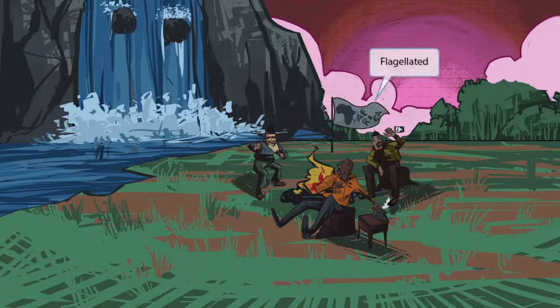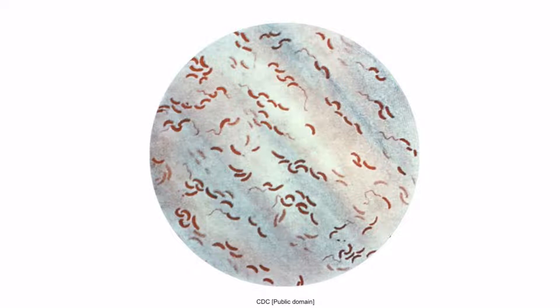We've shown a flag in the background to help you remember that Vibrio is flagellated. This is a gram stain of Vibrio cholerae — notice that it's pink or red appearing, curved, and has prominent flagella. So remember: Vibrio cholerae is a flagellated gram negative curved bacillus.